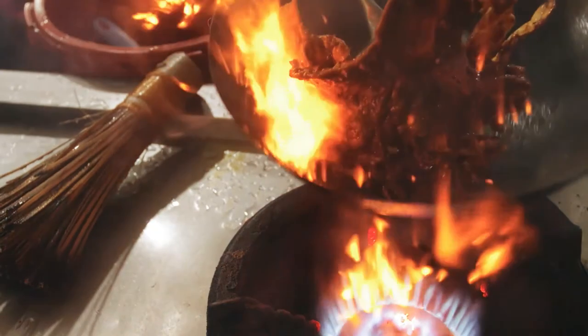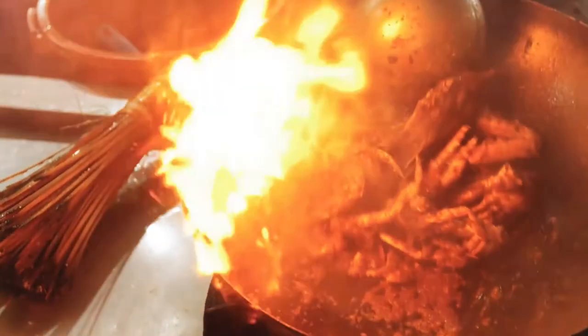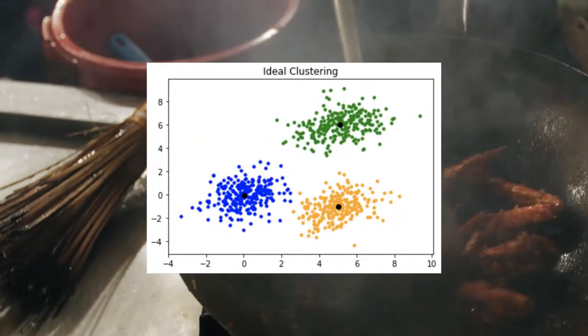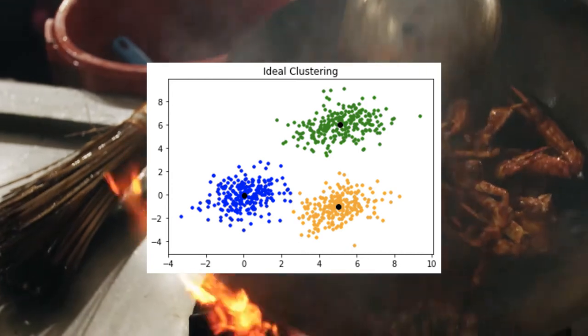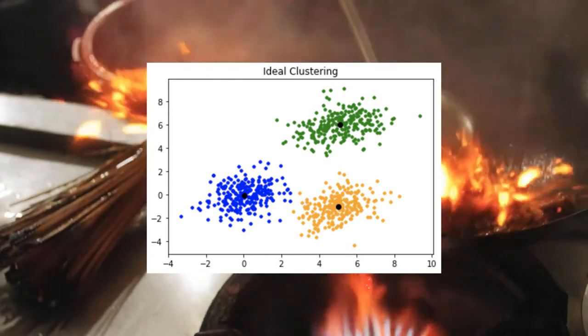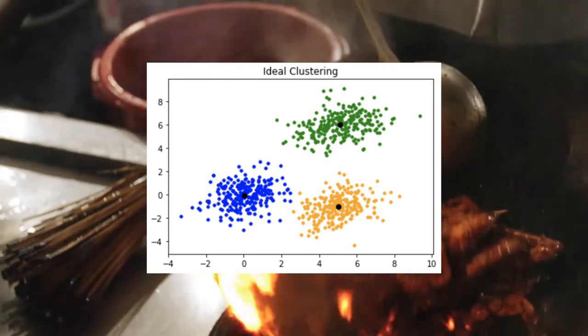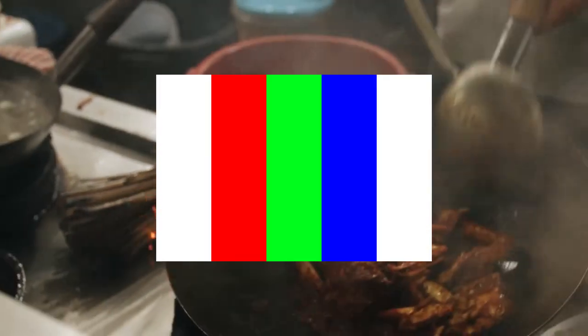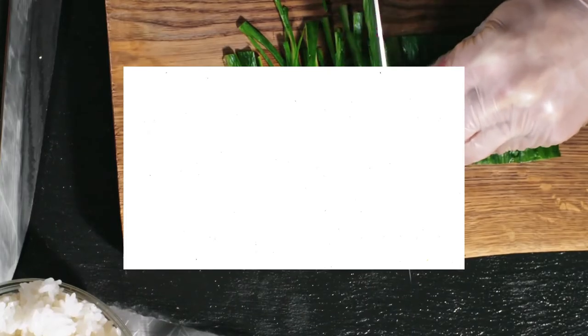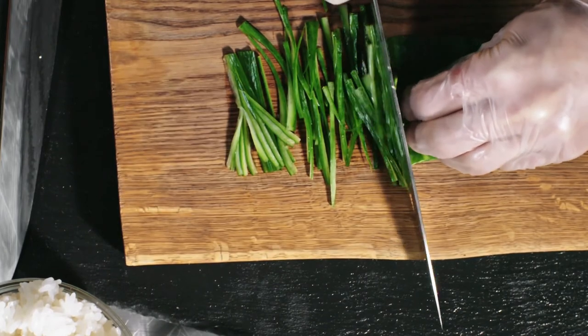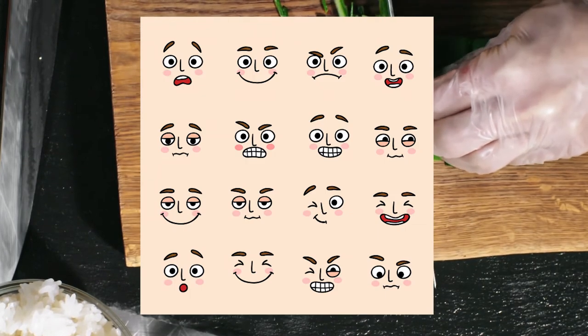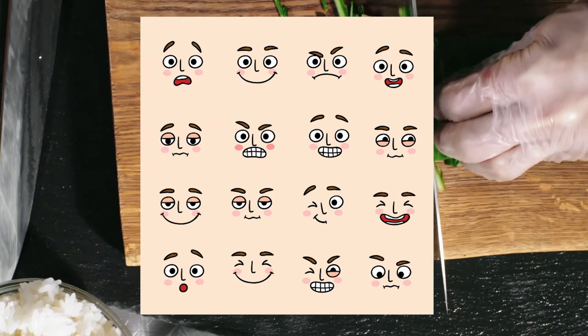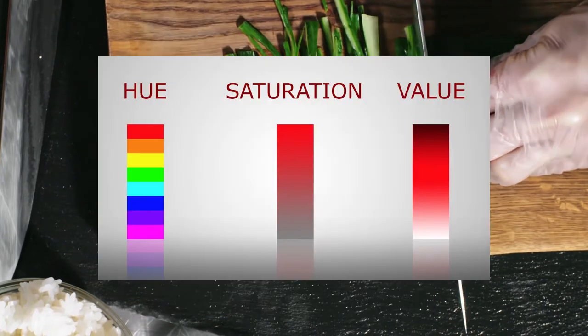We can't simply average all the pixel values, as the resulting colors will be misleading. For example, a pixel with equal numbers of red, green, and blue pixels — averaging them will result in white. Now, the emotions from the poster should be ready. Let's start the HSV algorithm.